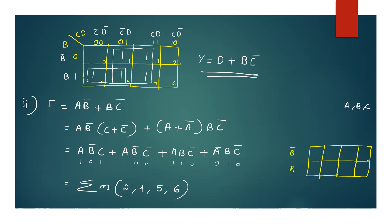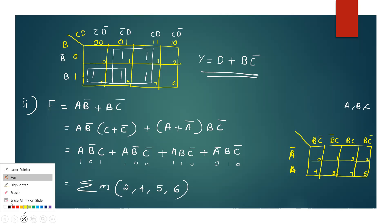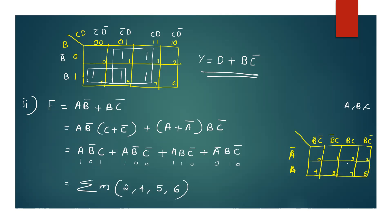Now checking this using the same method. These values correspond to a-bar and a. With values for B, C and B, C-bar: 0 1 3, 2 4, 5 7, 6 — confirming the expression equals Σm(2, 4, 5, 6).